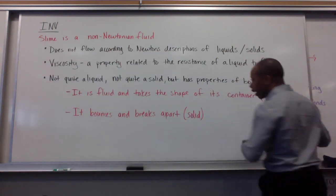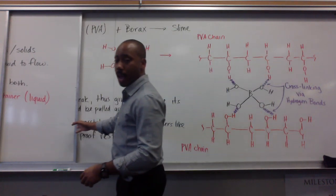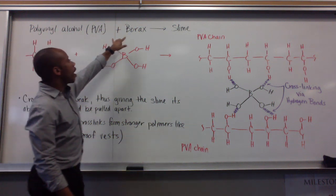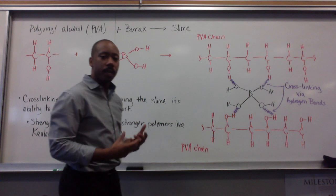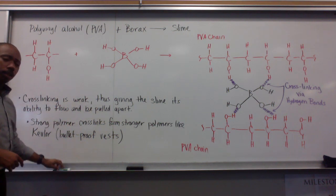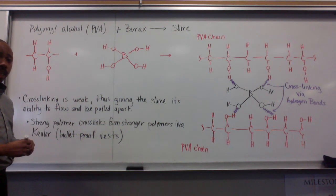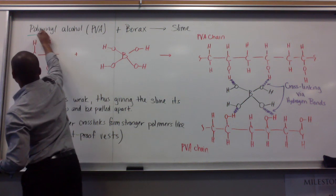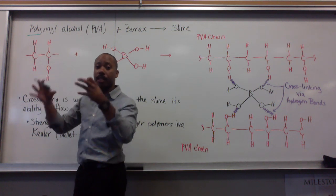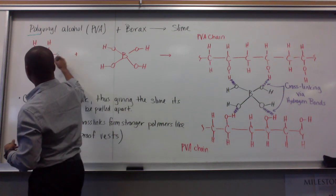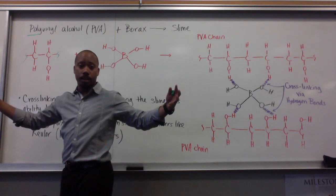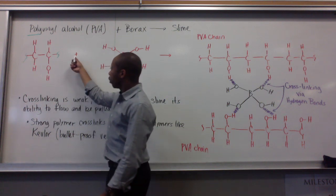Let's talk about the science behind this actual experiment. We had two substances: PVA, which stands for polyvinyl alcohol, and borax. The P in PVA stands for poly, meaning many vinyl alcohol groups. This is one vinyl alcohol group. If you take many of these and stack them together, you get PVA — many vinyl alcohol groups. It's a long chain. So PVA is a big, long chain, and this reacted with borax.